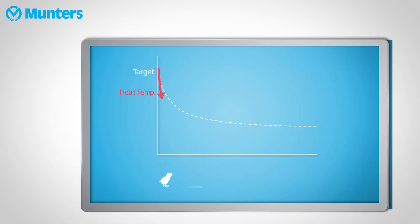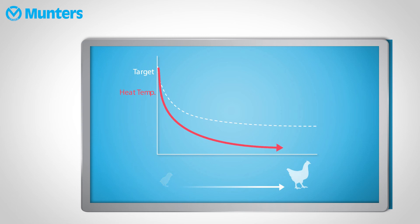In general, when the birds are young, we recommend that the heat temperature will be very close or even identical to the target. And as the birds grow older, gradually increase the gap between target and heat points.